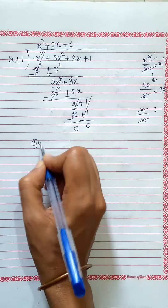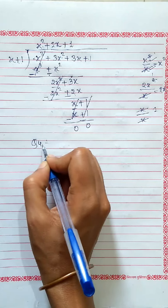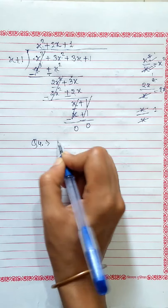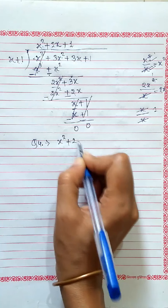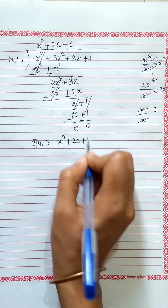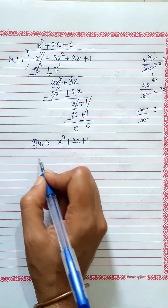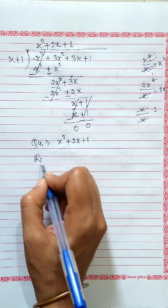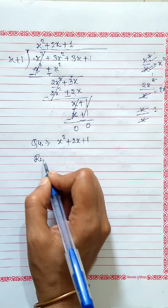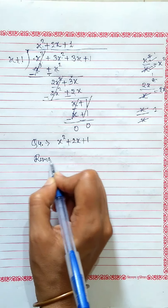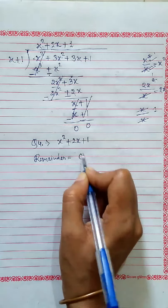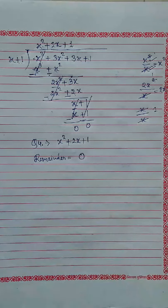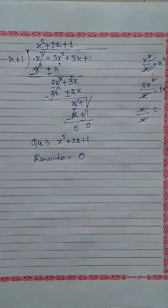So our quotient is x squared plus 2x plus 1, and the remainder is 0.